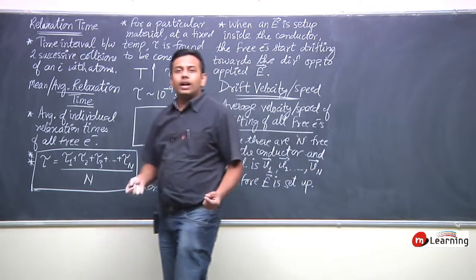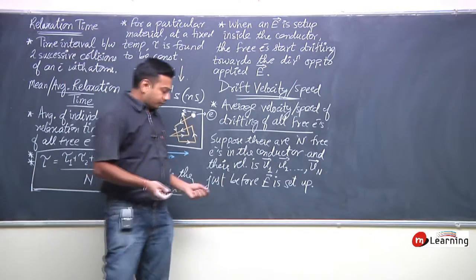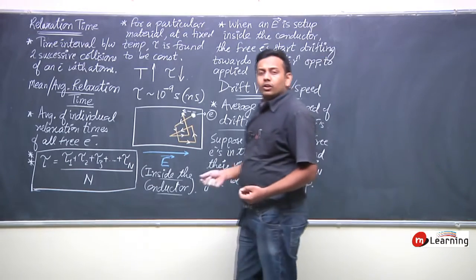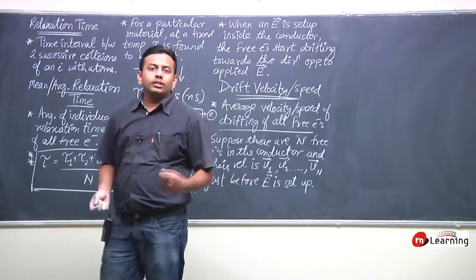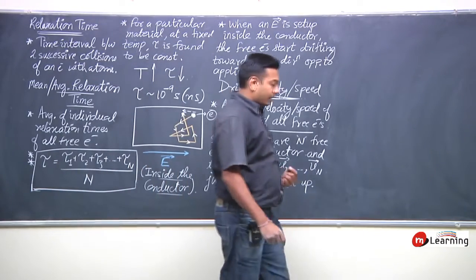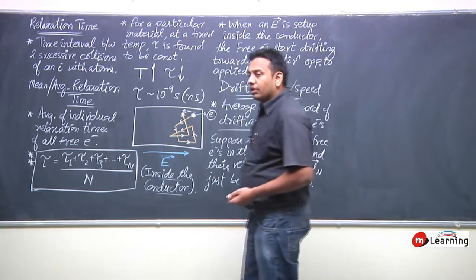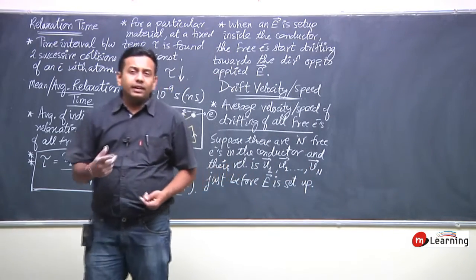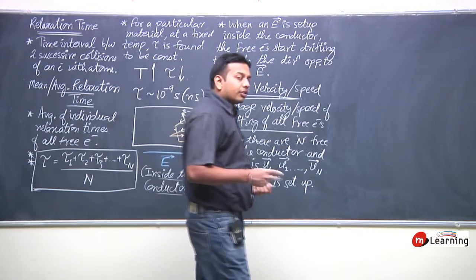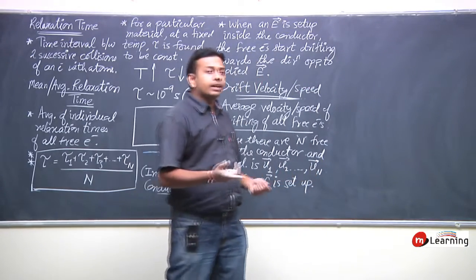When the electric field is set up, just before that, the velocities of electrons are u1 vector, u2 vector, u3 vector, up to un vector. As we set up the electric field, a force will act on these electrons, meaning an acceleration will develop.